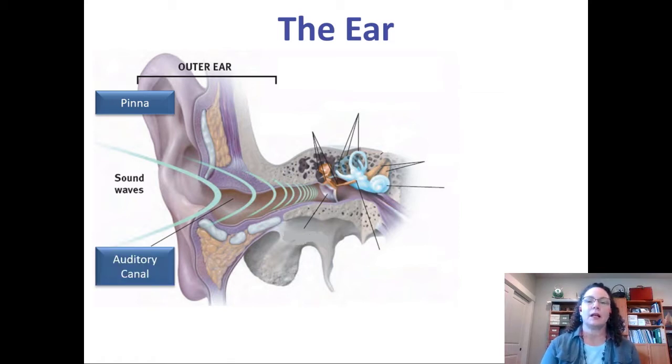The auditory canal is the long tube that goes from your pinna all the way up to your eardrum. The outer ear ends at the eardrum. As the sound wave goes down the auditory canal, you see that it gets compressed as it goes into that smaller space. Then it has this effect on the eardrum that causes it to rattle. The timing of that rattling of the eardrum is going to help to convey the sound into our sound receptors.